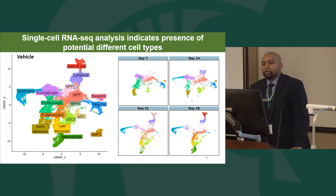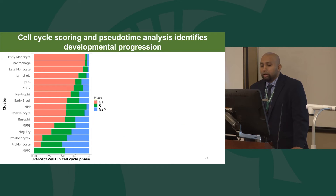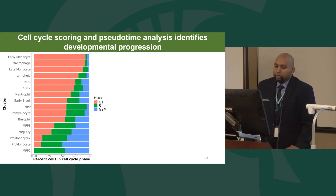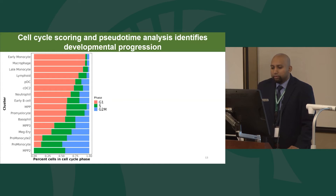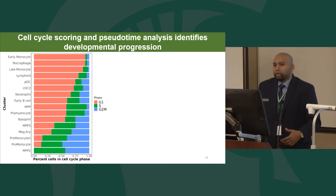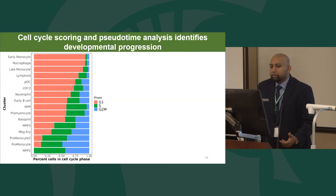We noticed these clusters often differed in expression of cell cycle genes, so we carried out cell cycle scoring. The progenitor clusters — such as MPP2 and pro-monocytes — were higher in S and G2M phase scoring and low for G1 phase, whereas more lineage-committed populations had a greater percentage of cells in G1 and very few in S and G2M phases. This could indicate that earlier progenitor populations cycle faster compared to more lineage-restricted populations.